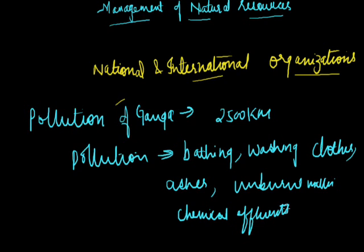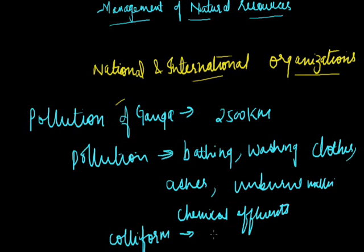Coliform is a group of bacteria found in human intestine whose presence in water indicates contamination by disease-causing microorganisms. So if we want to confirm pollution in any type of water or river, the presence of coliform can be used for the detection of pollution, because its presence in water indicates contamination by disease-causing microorganisms.